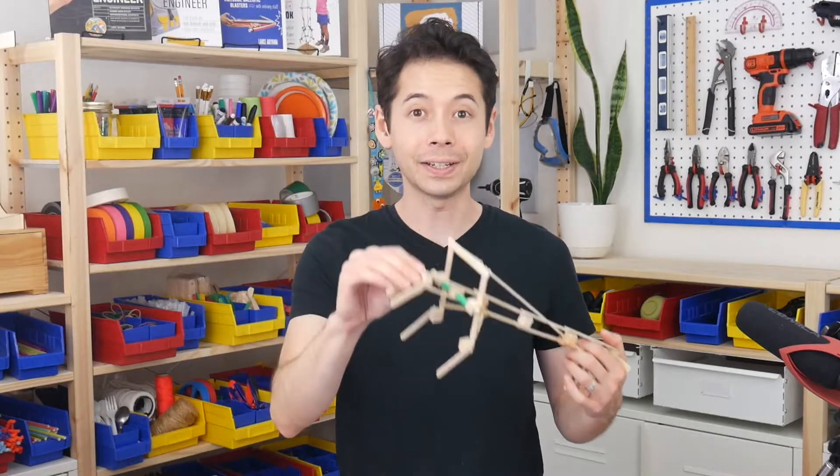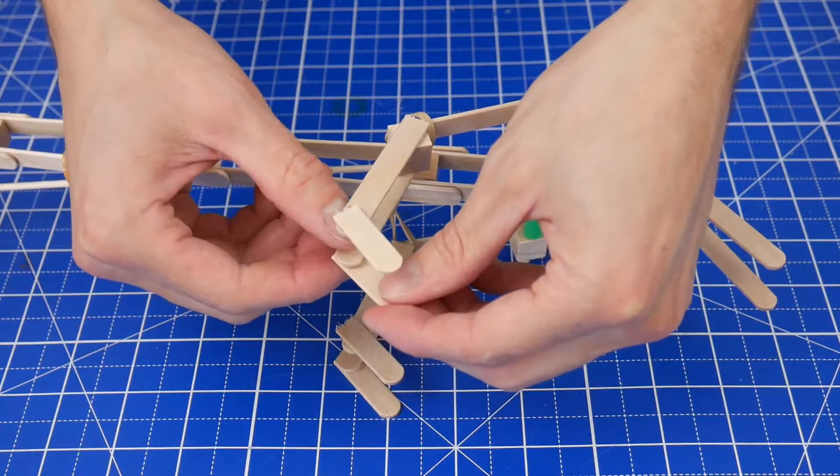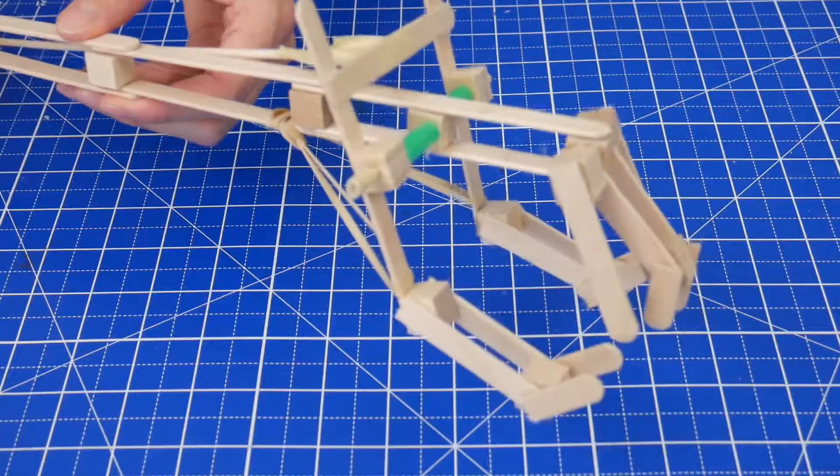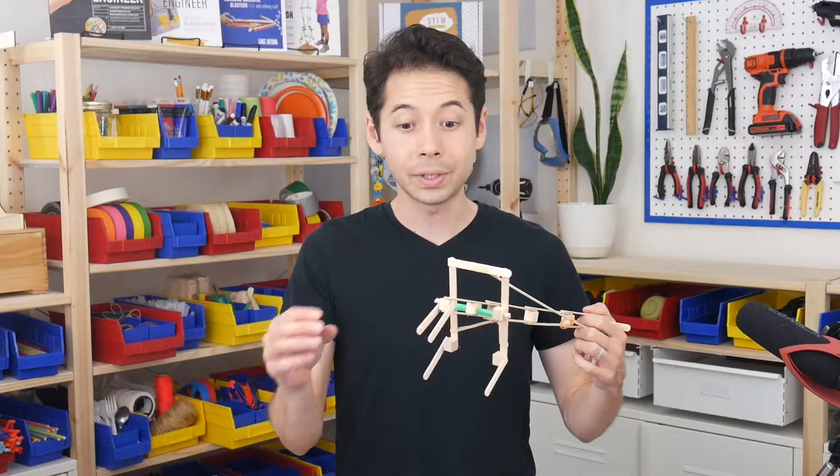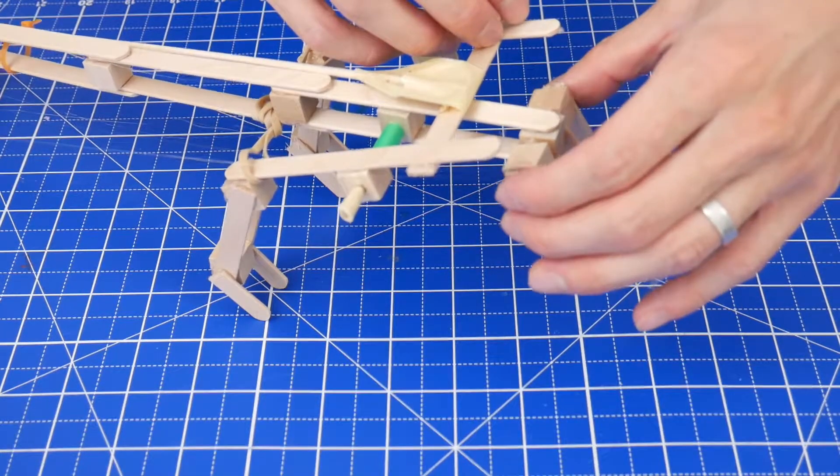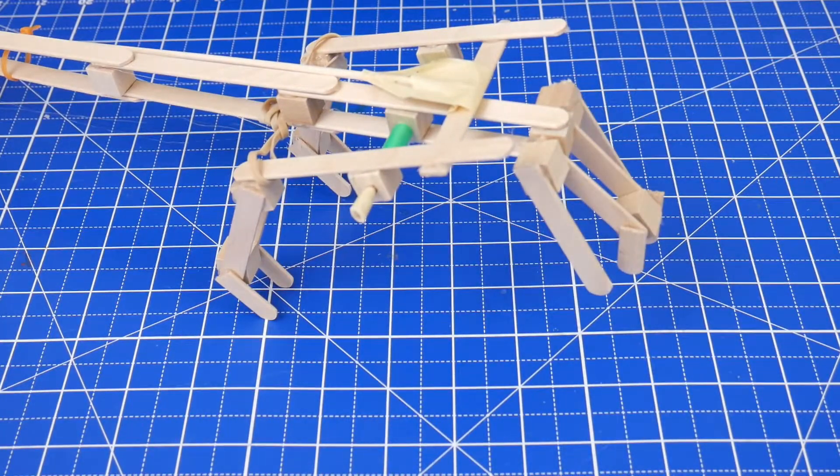The first are the fingers. You can keep building onto them so that they're longer, and then that way when the grabber closes, the fingers actually come together or even overlap. Or you could try building out fingers off to the sides of this middle one so that there are more than three.